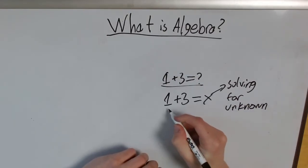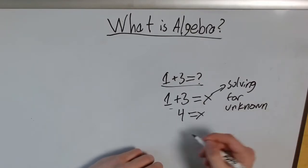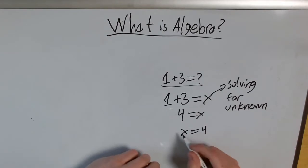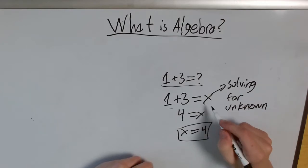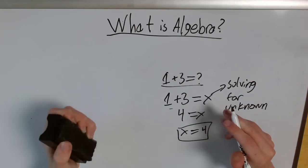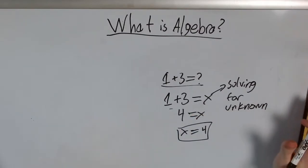You might look at it and say, hey, 1 plus 3 is 4. That means 4 equals x, which means x equals 4. That's a very basic algebraic equation. We have a variable that represents a number that we don't know, and we try to solve it using the basic rules of arithmetic.